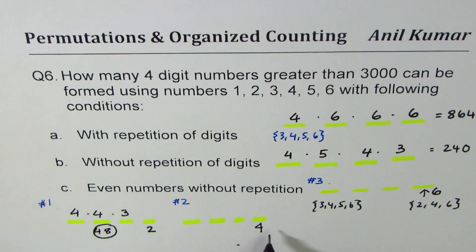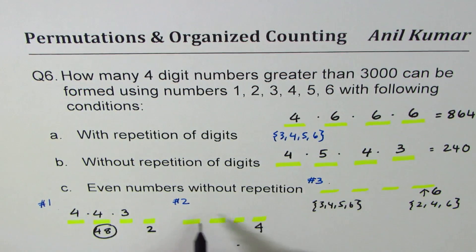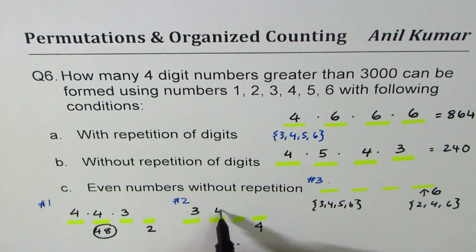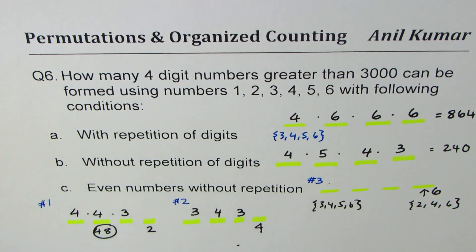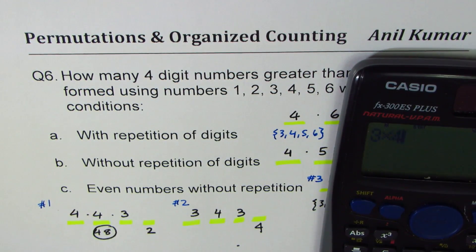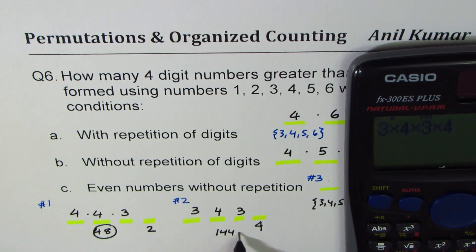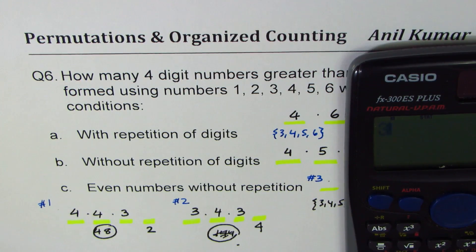Case two: place four in the last digit. Now my choices for the thousands place are limited because four is in the set three, four, five, six — so only three choices remain. We've placed two numbers, leaving four for the hundreds place and three for the tens place. That gives three times four times three — wait, let me redo: three times four times three equals 36.